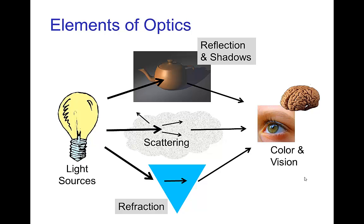There's the light sources that produce light. Then that light may be reflected off of surfaces, those surfaces may have shadows.